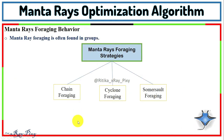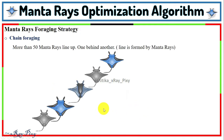There are three intelligent foraging strategies used by Manta rays: chain foraging, cyclone foraging, and somersault foraging. In chain foraging, Manta rays form an ordinary line.